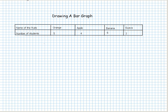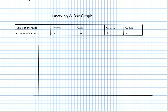Let's try to draw the bar graph for this data. We need a graph with a vertical and a horizontal axis. The next thing is to decide the scale — how many squares or units would represent a given number. Here, two units will represent one student.